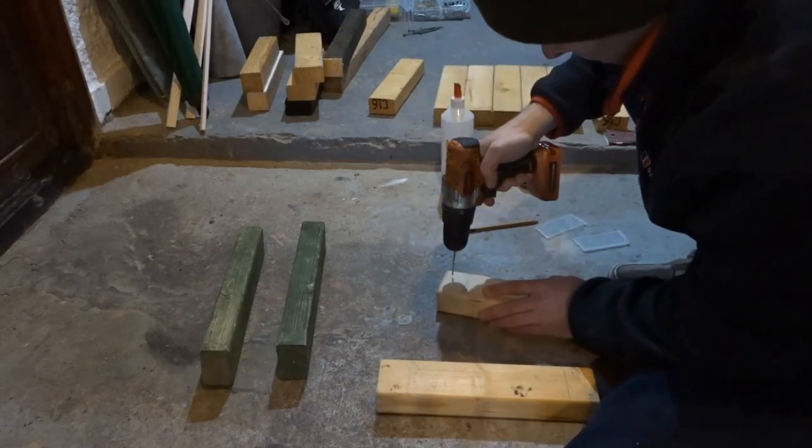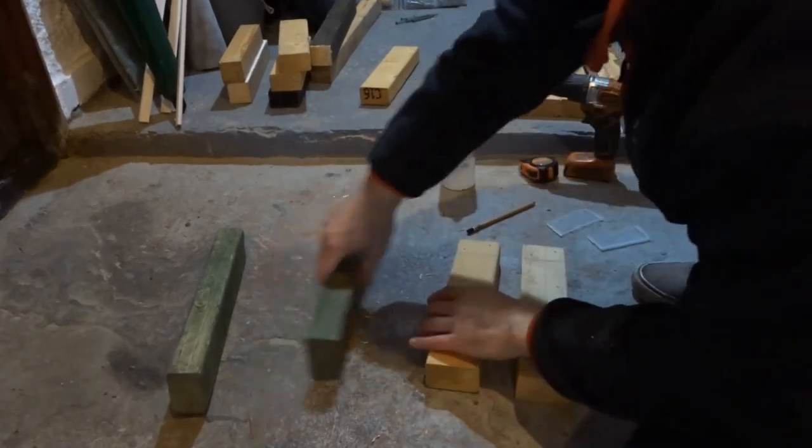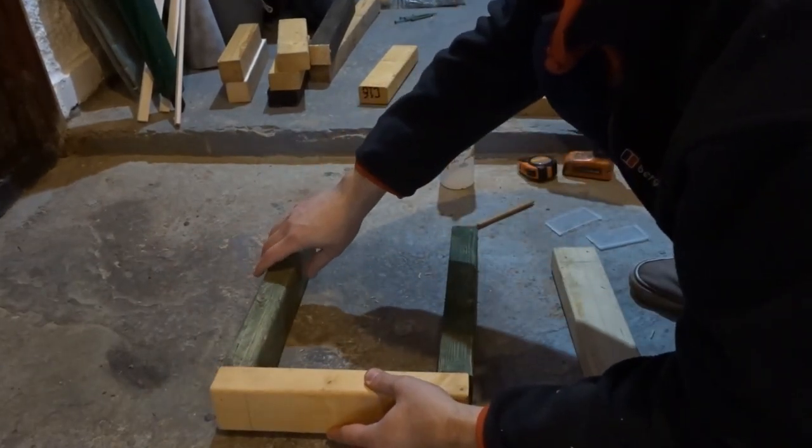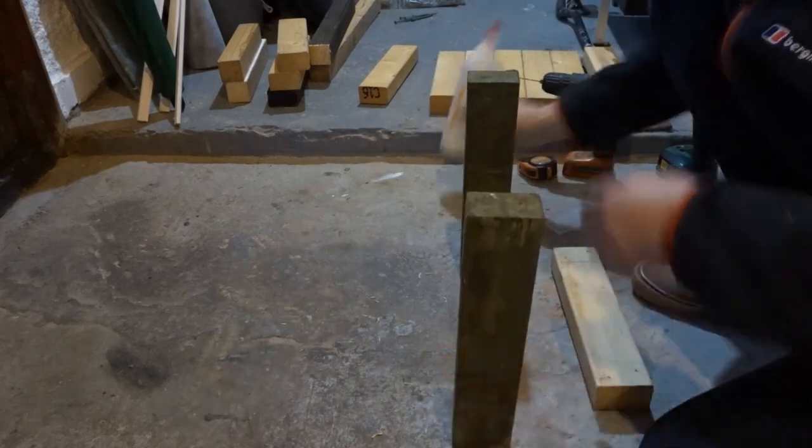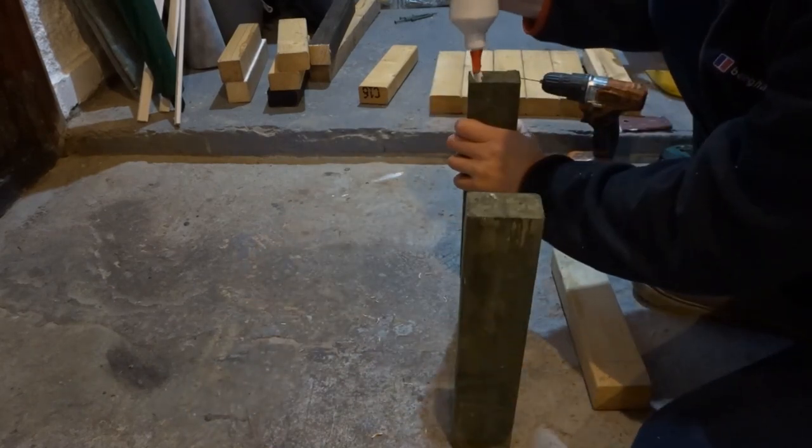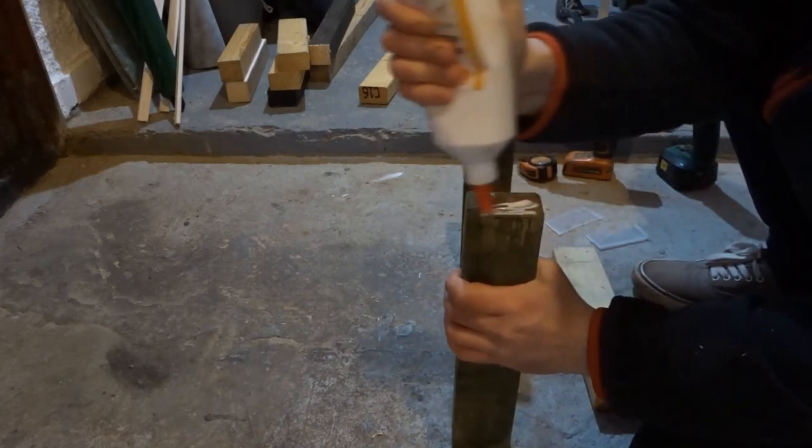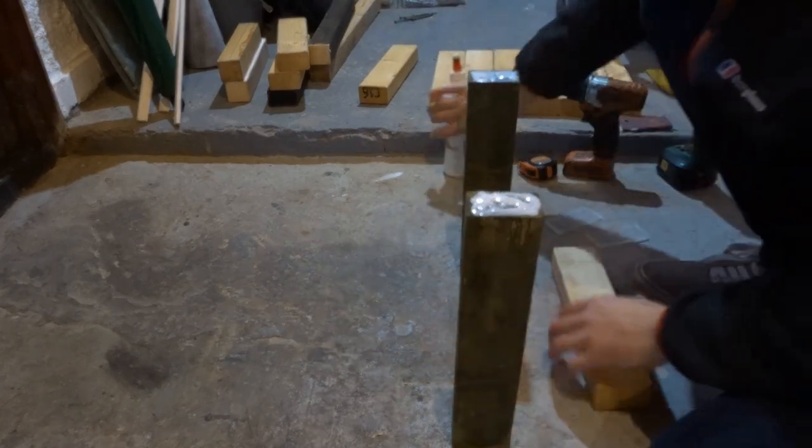I'm using three by two CLS timber. Some of it's painted green because some was left over from my pallet wood fence. Now I'm just going to add some glue to the ends. I've got my pilot holes all ready and I'm going to make sure it's nice and square.